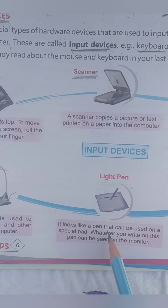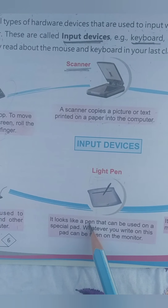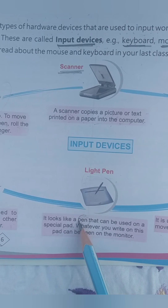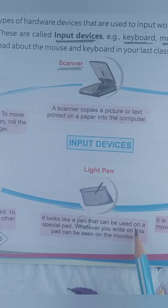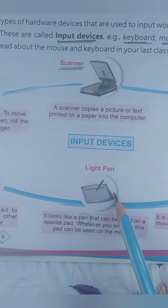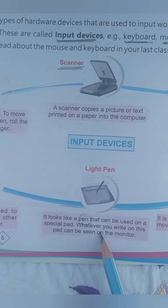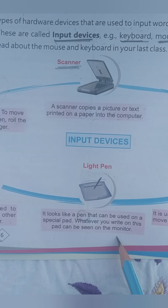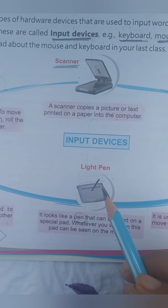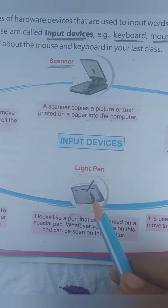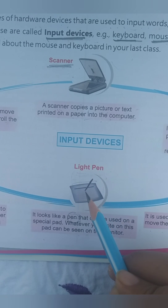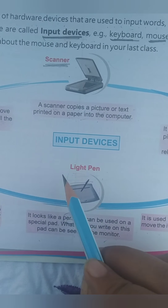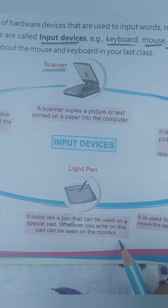Light pen. A light pen looks like a pen and can be used on a special pad. Whatever you write on this pad can be seen on the monitor. You write on this pad using the light pen, and whatever you have written will be displayed on the monitor.